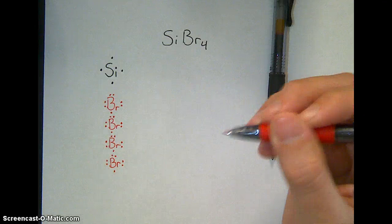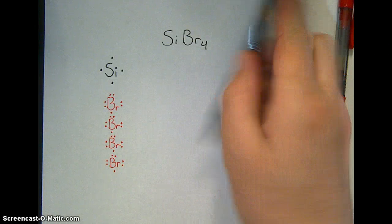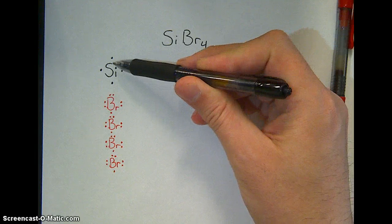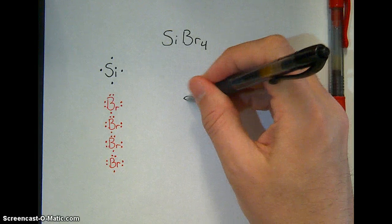They're your dots, you can draw them wherever you want. All right, now to figure out the shape, I look for the one that has the most bonding sites. Silicon has four bonding sites, so I'm going to put it in the middle.